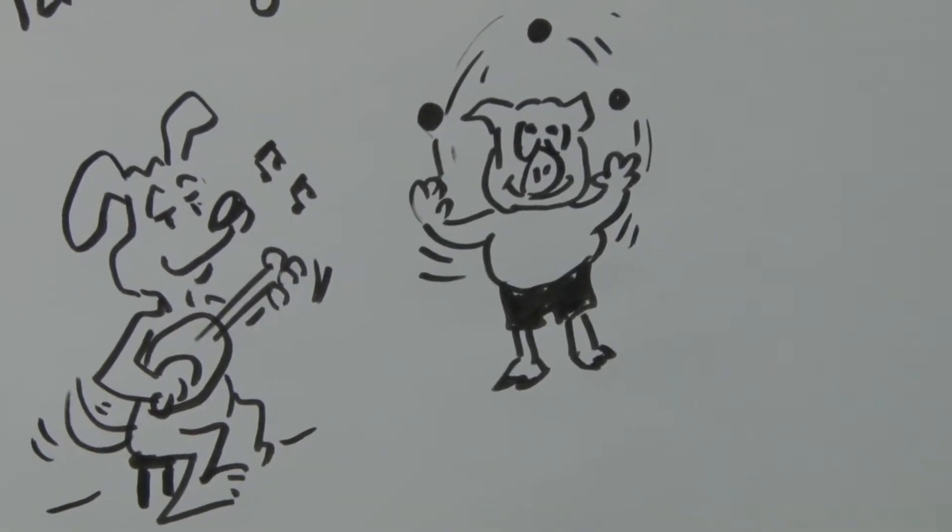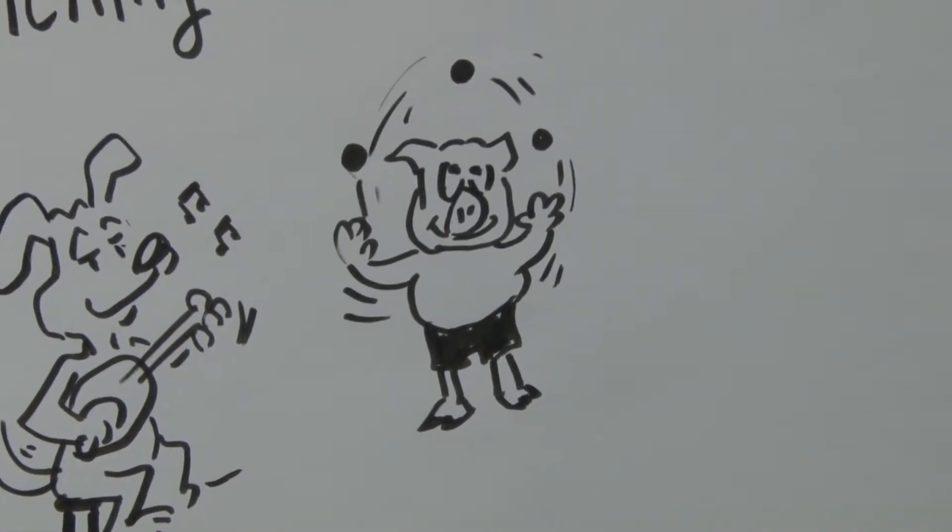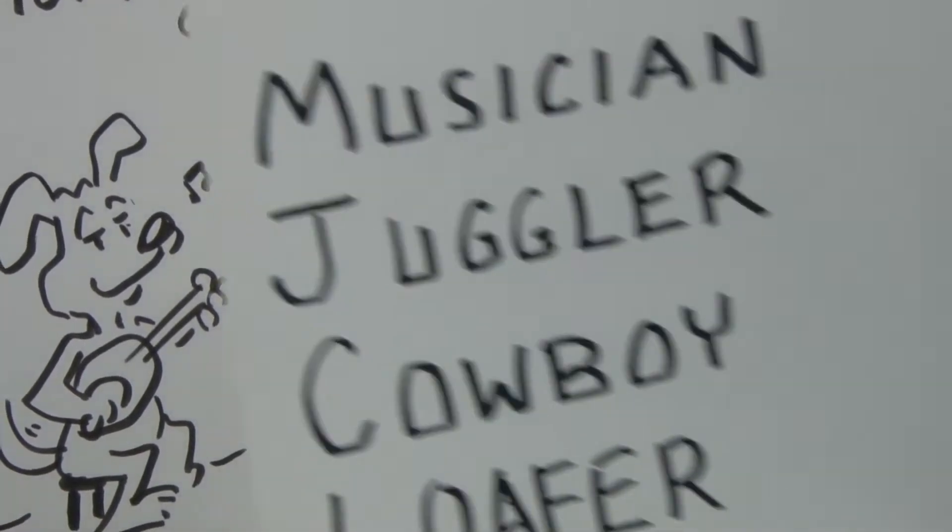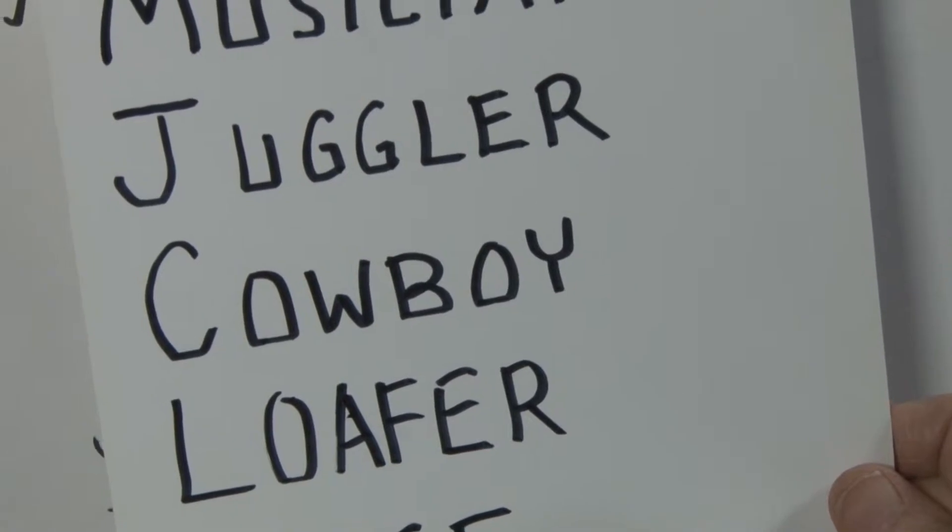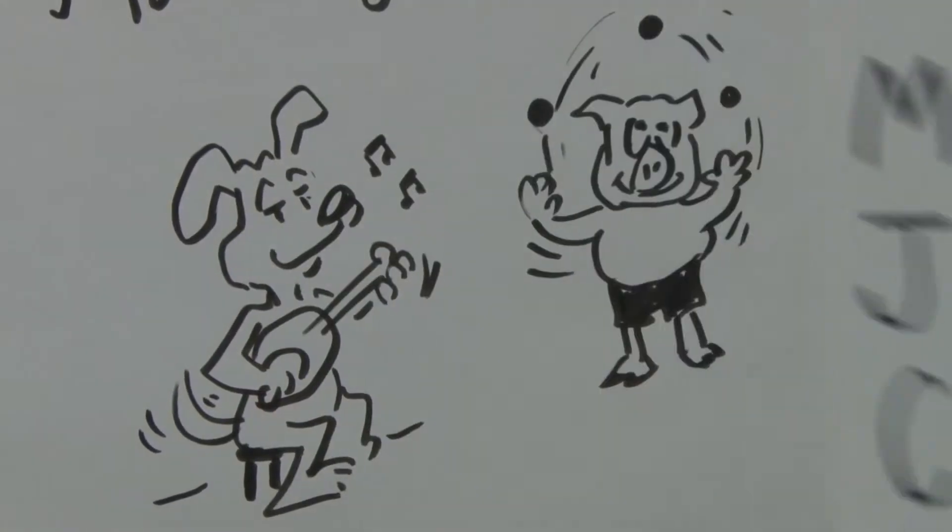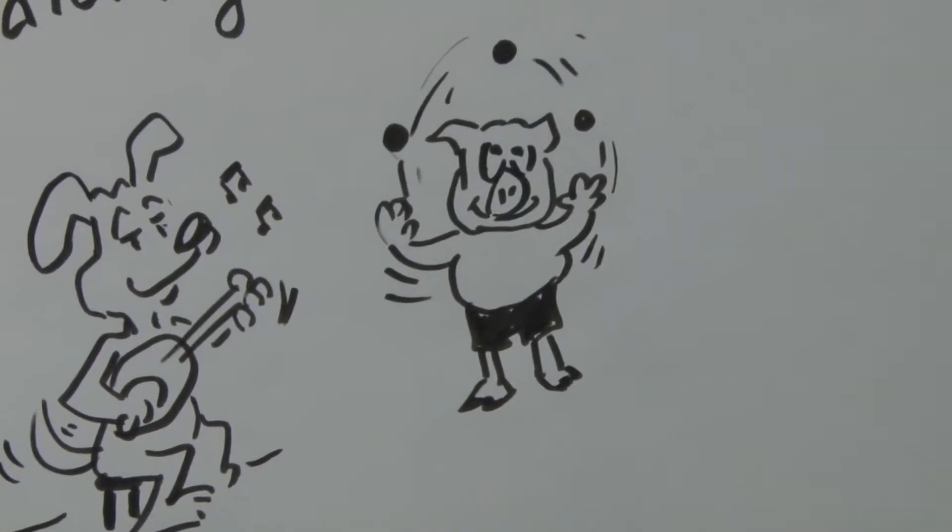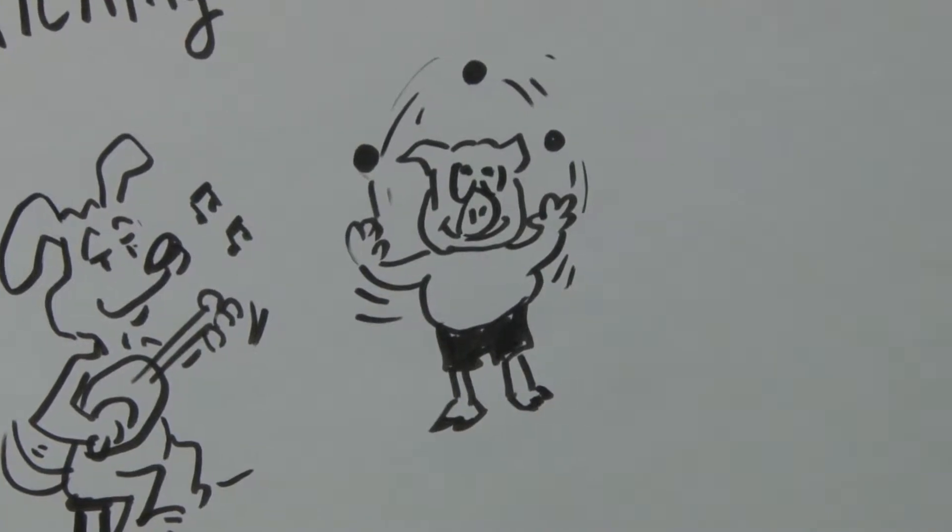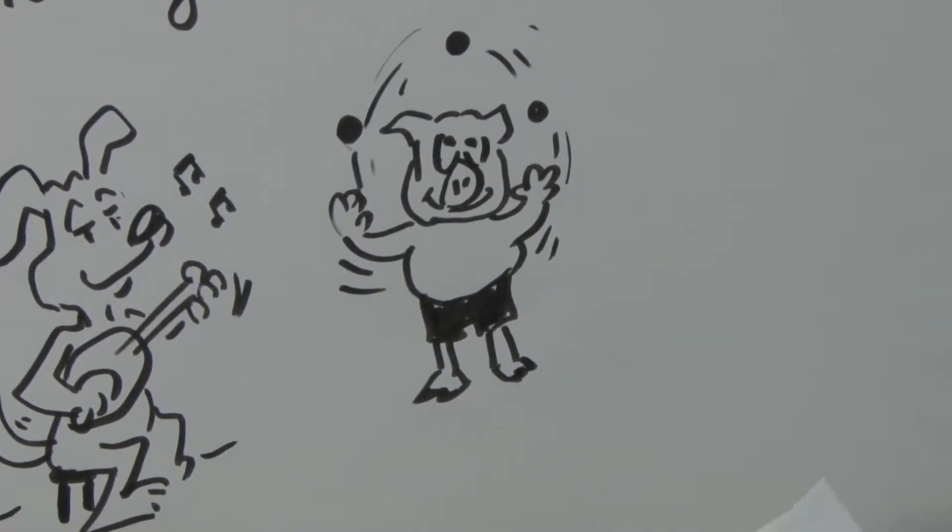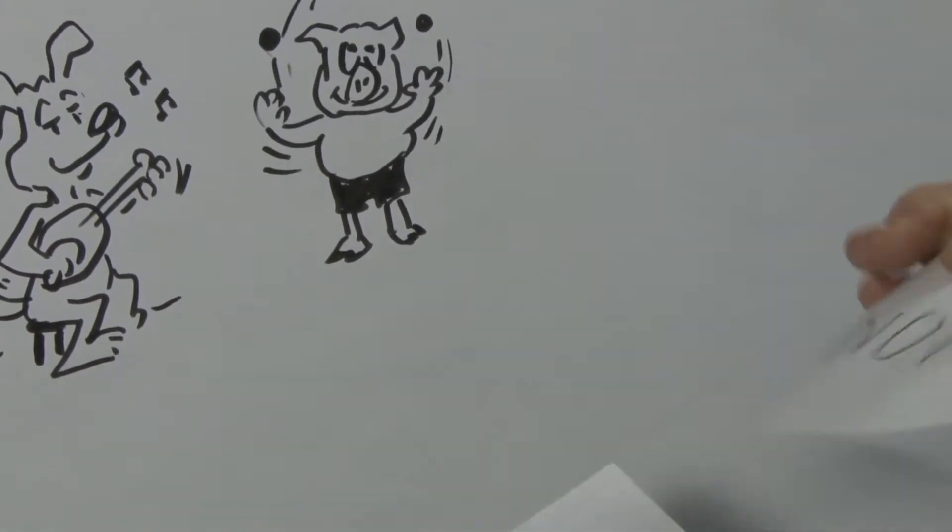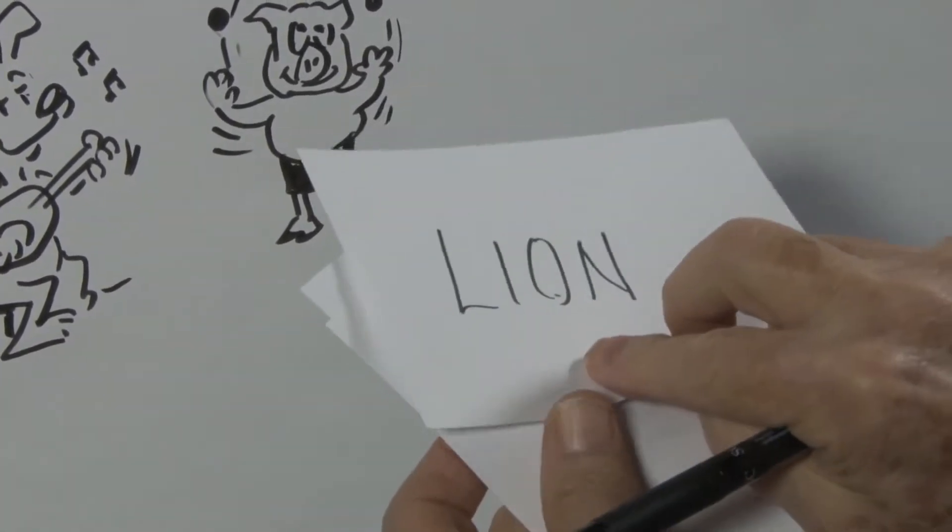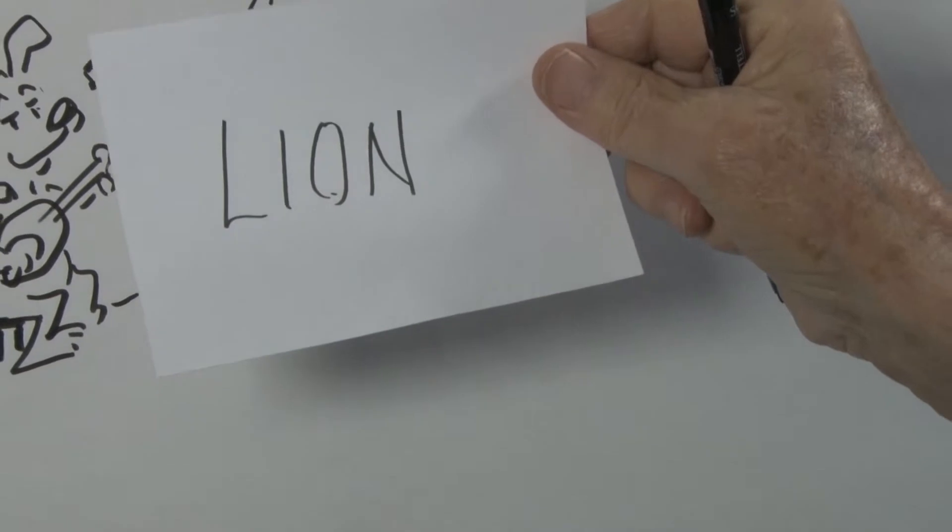Now we've got a musician and a juggler. Let's see what we can do with a cowboy. What critter are we going to have as our cowboy? A lion! A cowboy lion.